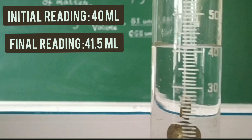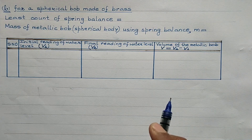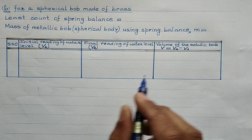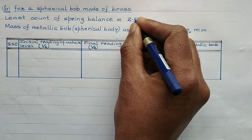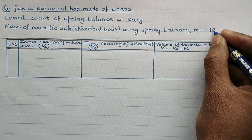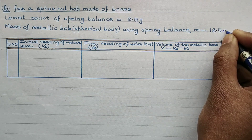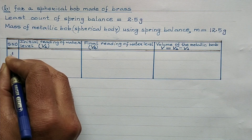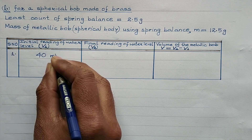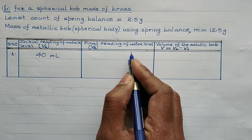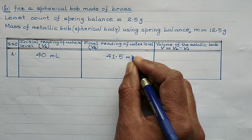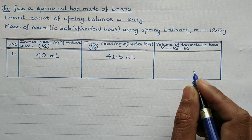The final reading can be taken as 41.5 milliliters. This is the observation table for the spherical bob made of brass. The least count of the spring balance is 2.5 grams. The mass of the metallic bob using the spring balance is 12.5 grams. The initial reading of the water in the measuring cylinder was 40 ml, and on immersing the bob the final reading was found to be 41.5 ml.